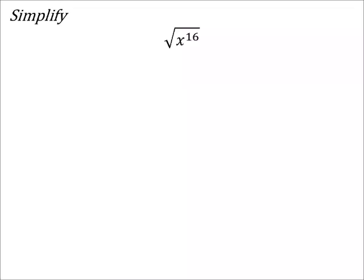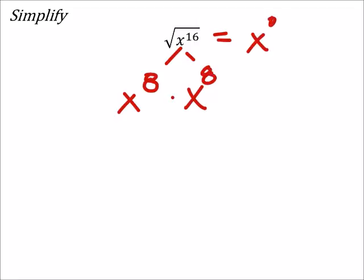So on this one, we could split this up into x to the power of 8 times x to the power of 8. So the square root of that would just be x to the power of 8, right there.